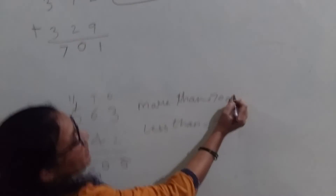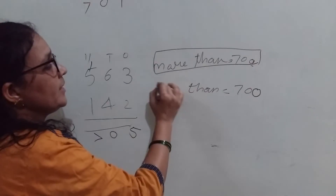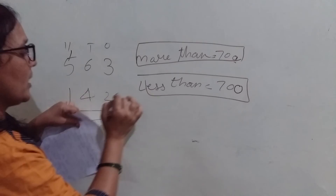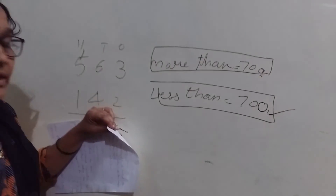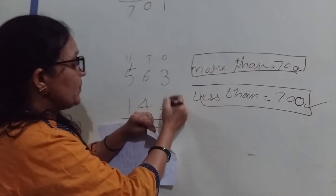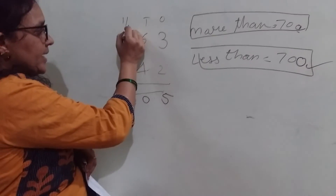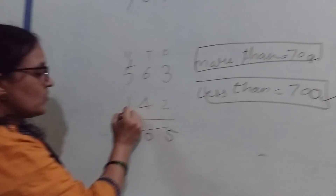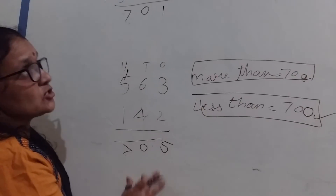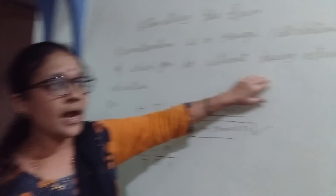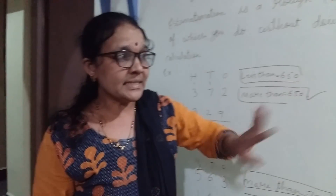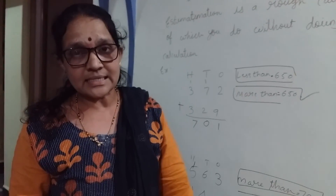Now next: here you have to take a mark — less than or more than 650. I will estimate more than 650. Then you calculate: 3 plus 2 is 5, 6 plus 4 is 10, carry 1, 1 plus 5 is 6, 6 plus 5 is 7. So this is called the estimate of the sum. I hope all of you understood. Whatever worksheet I give, just see the video and solve the sums. Thank you.